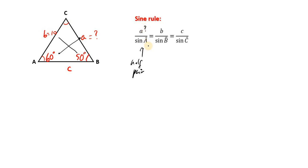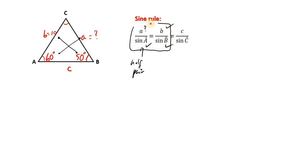Side A is unknown while angle A is known. Now we need a full pair. Let's go to the other line that helps us make the X — at both ends of that line we have known values, hence this line has our full pair. The 50 degrees, that's angle B, is known, and 10 units means side B is known. So we can take these two terms for both sides of the equation: A divided by sine of angle A equals B over sine of angle B. This means we can use the sine rule — we have one unknown.